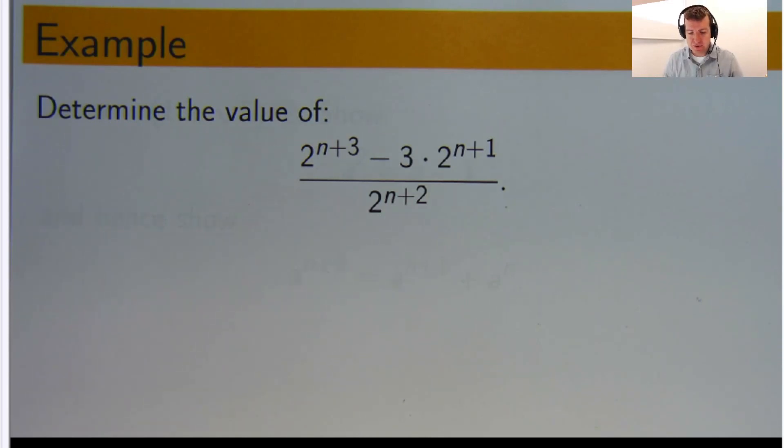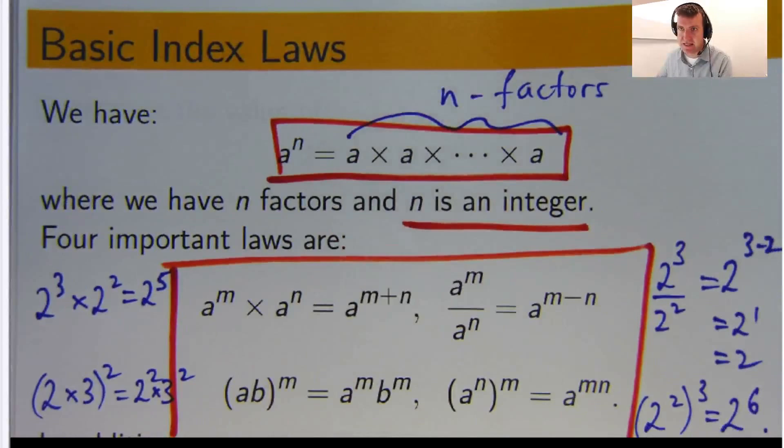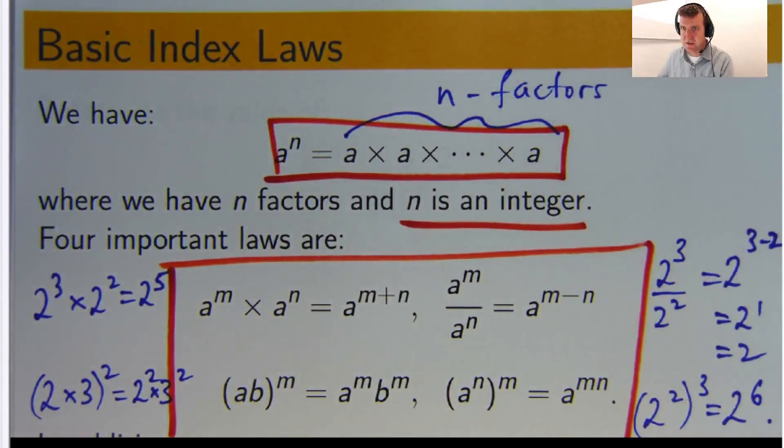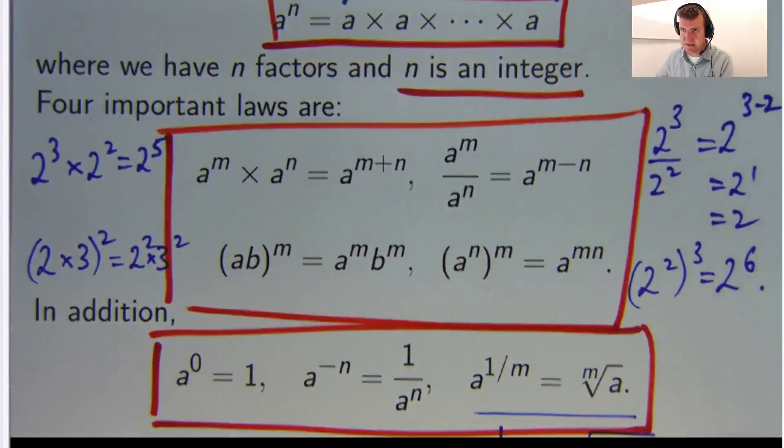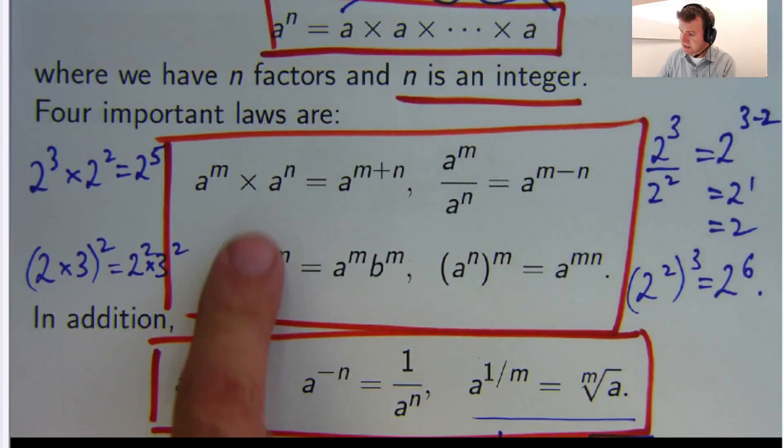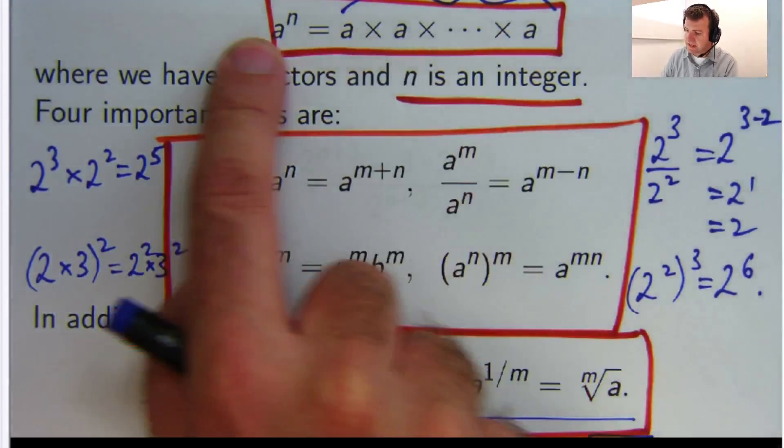Now in previous videos, we talked about the following basic index laws. So, just to refresh your memory, I'm just going to flash them up there pretty quickly. So there are six here, and this is sort of a basic definition.